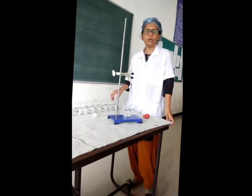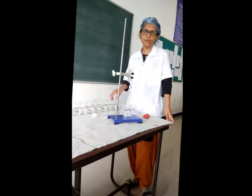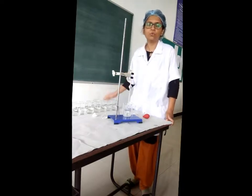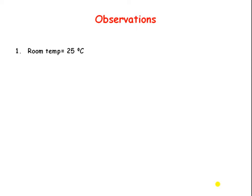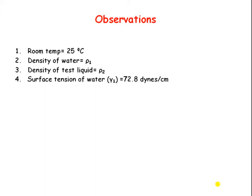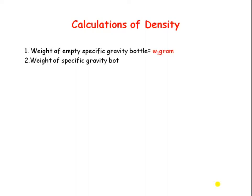After counting the drops you can calculate the surface tension of each liquid and then plot a graph. Now we will discuss the calculation part. Room temperature is 25°C. Density of water is ρ₁ and density of test liquid is ρ₂. Surface tension of water γ₁ is 72.8 dynes per centimeter.